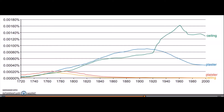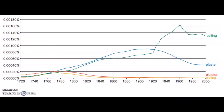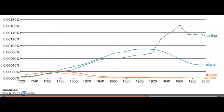Let me show you another n-gram graph from the June 2022 past paper. We can observe a decline in the frequency of alternative spellings over time, while the word 'ceiling' demonstrates an increase in usage. The word 'ceiling' (C-E-I-L-I-N-G) has become the accepted and standardized form, while spellings like 'plaster' and 'C-I-E-L-I-N-G' have fallen out of favor due to changes in spelling conventions.